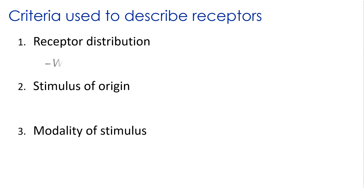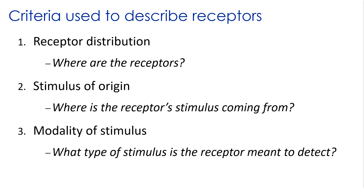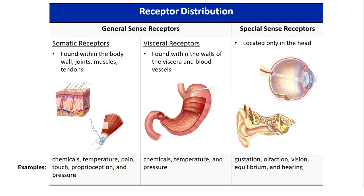Each of these criteria addresses a different question. With receptor distribution, we're asking where the receptors are actually found. Stimulus of origin considers where the receptor stimulus is coming from. And we can also ask what type of stimulus the receptor is actually meant to detect. We're going to consider these three different criteria and see how we can group receptors into different categories based on them.